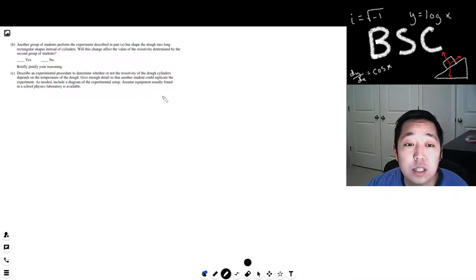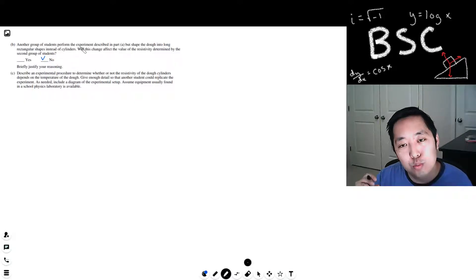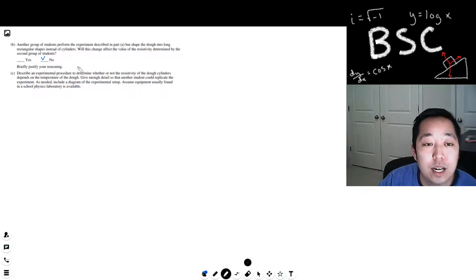And then next one, part four. Another group of students performed the experiment described in part A but shaped the dough into long rectangular shapes instead of cylinders. Will this change affect the resistivity determined by the group of students? No. Technically yes, maybe, depends on the frequency and everything of what they would do with the current. But we're going to assume, which we do in physics one, is that the current is uniform throughout the entire dough.